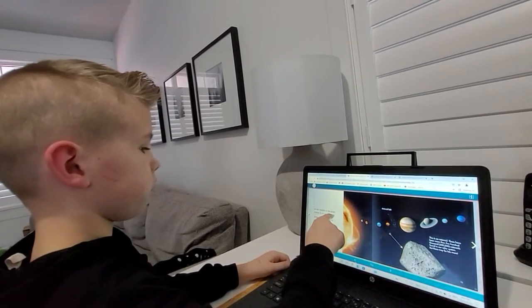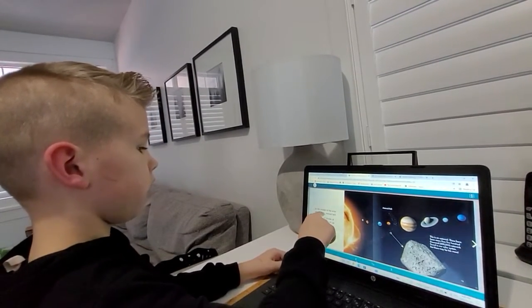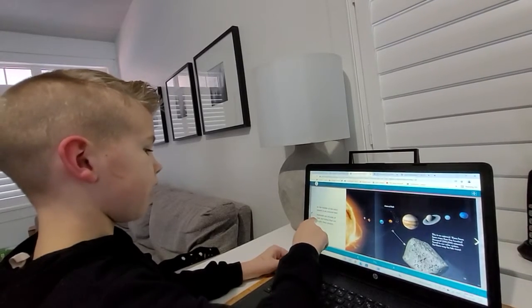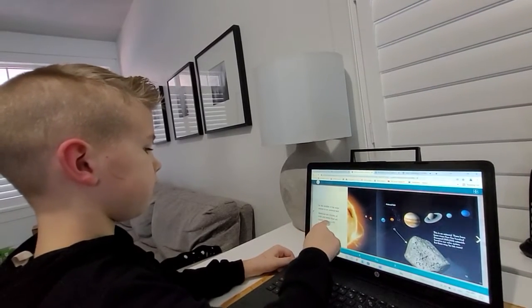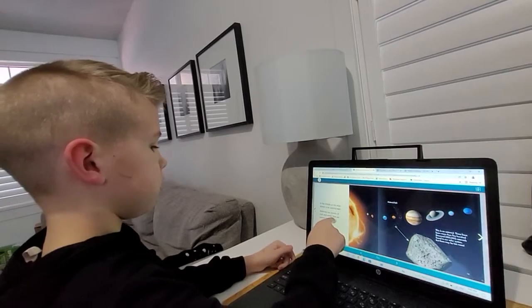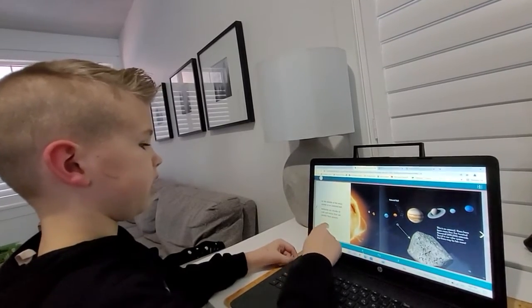In the middle of the solar system is an asteroid belt. Asteroids are chunks of rock and metal that are smaller than planets.